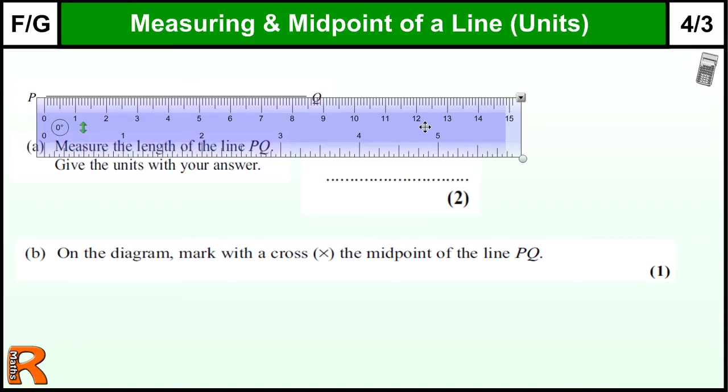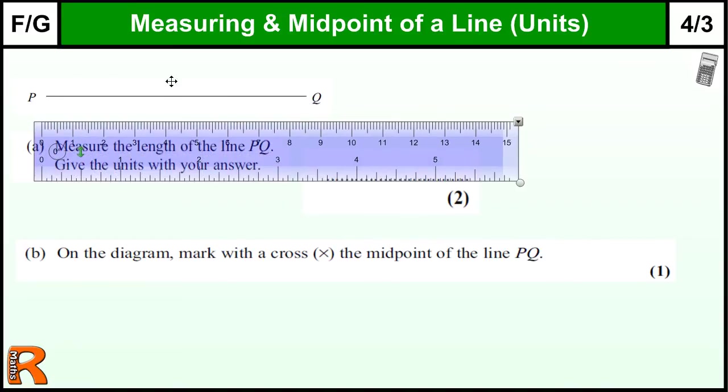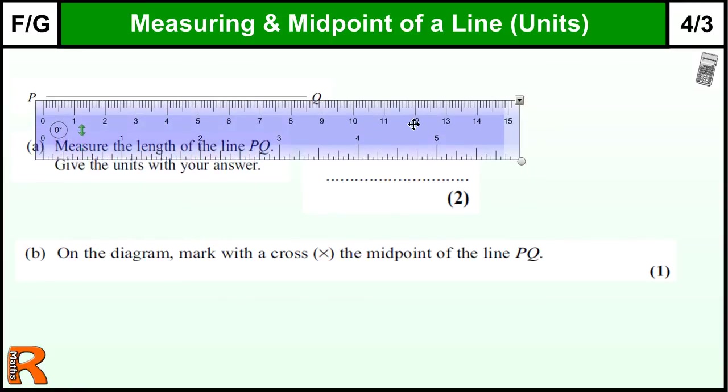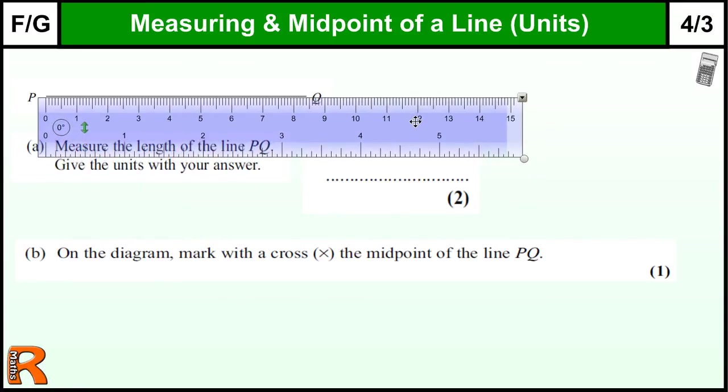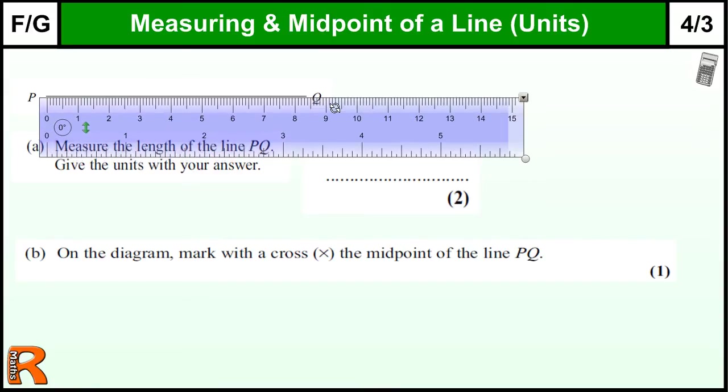Also, there are some people that make mistakes on this. Obviously depends on how big your screen is whether you can see this at the right size. I've made my ruler to be the correct length. If you get hold of the original paper it should be this length. So the key thing that some people don't realize is don't just put it from the end of your ruler, you can start from the zero. Once you do that you should have no problems.